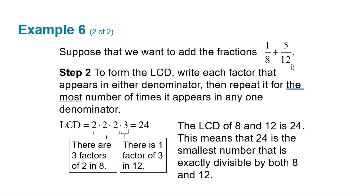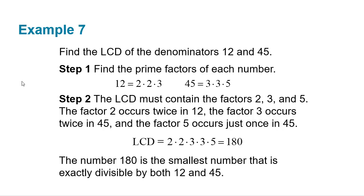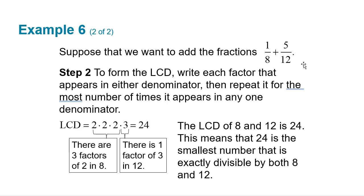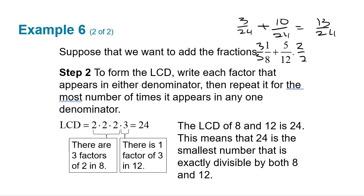Now we know the least common denominator is 24. We need to convert each fraction into 24ths. To get eight into 24, we multiply by three, so top and bottom get multiplied by three, giving 3/24. For the twelfths, we multiply by two, giving 10/24. Then we get 13/24. The only thing the LCD method saved us was not having to reduce — that's it.